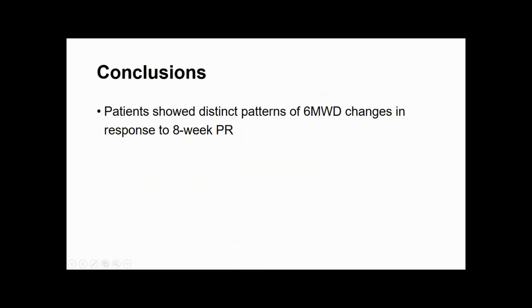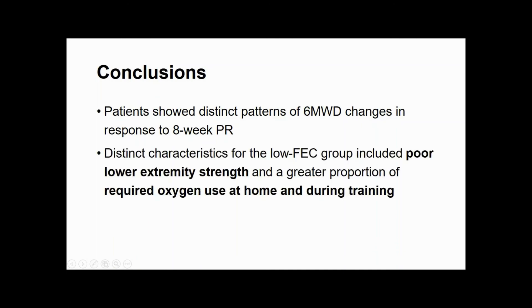In conclusion, patients showed distinct patterns of 6-minute walk distance in response to 8-week pulmonary rehabilitation. Poor lower extremity strength and a greater proportion of required oxygen use at home and during training were distinct characteristics for the low Functional Exercise Capacity group. You can read our article to find out more detailed information about our study.